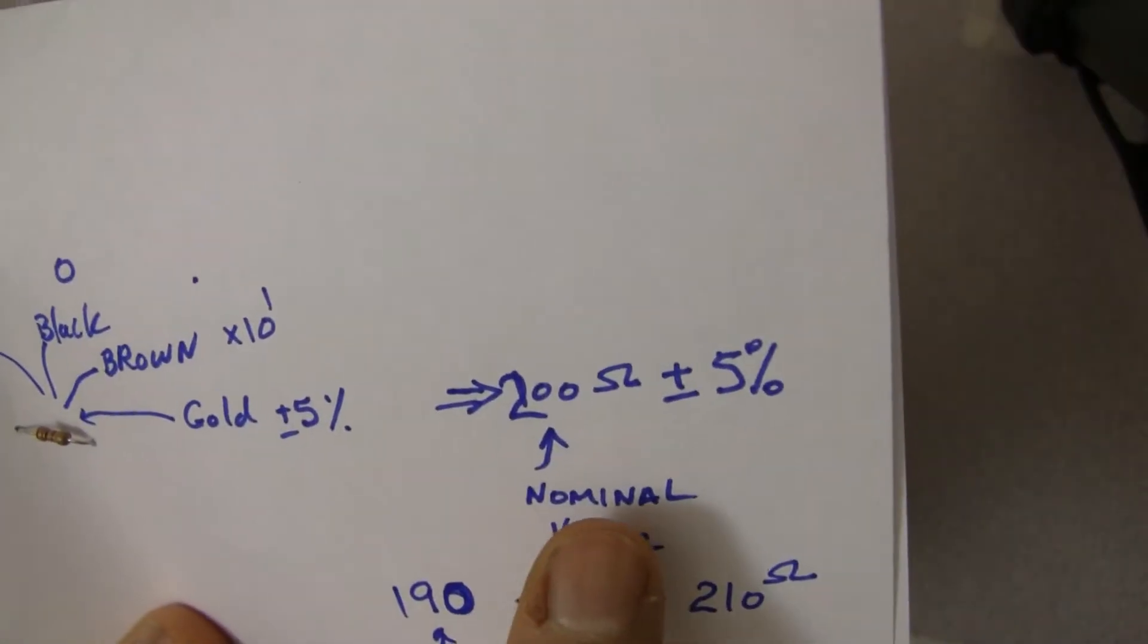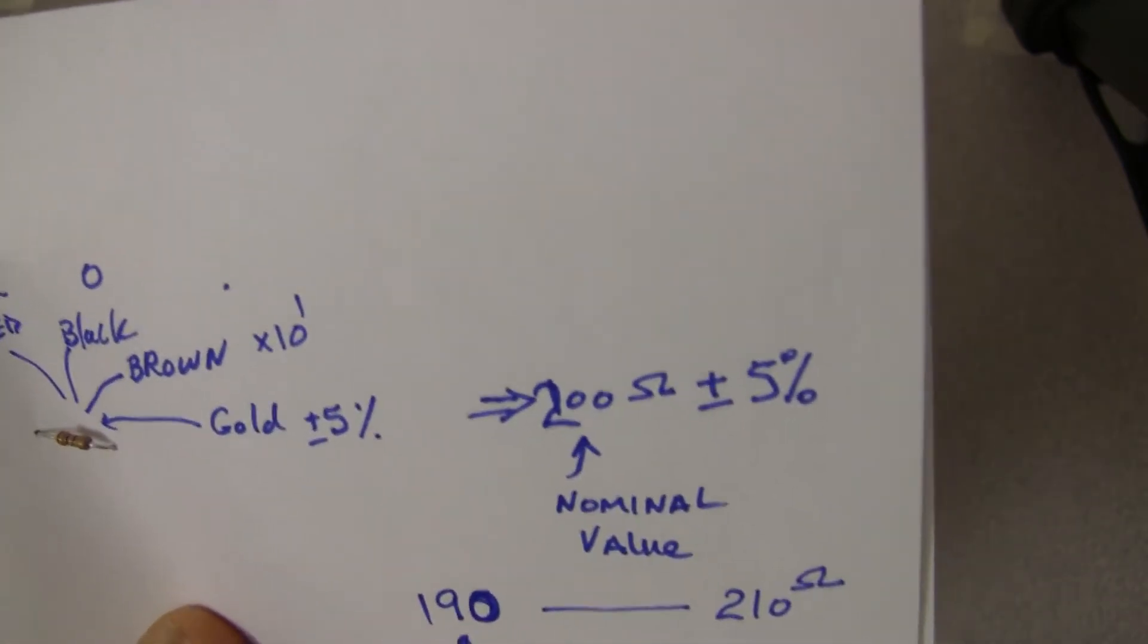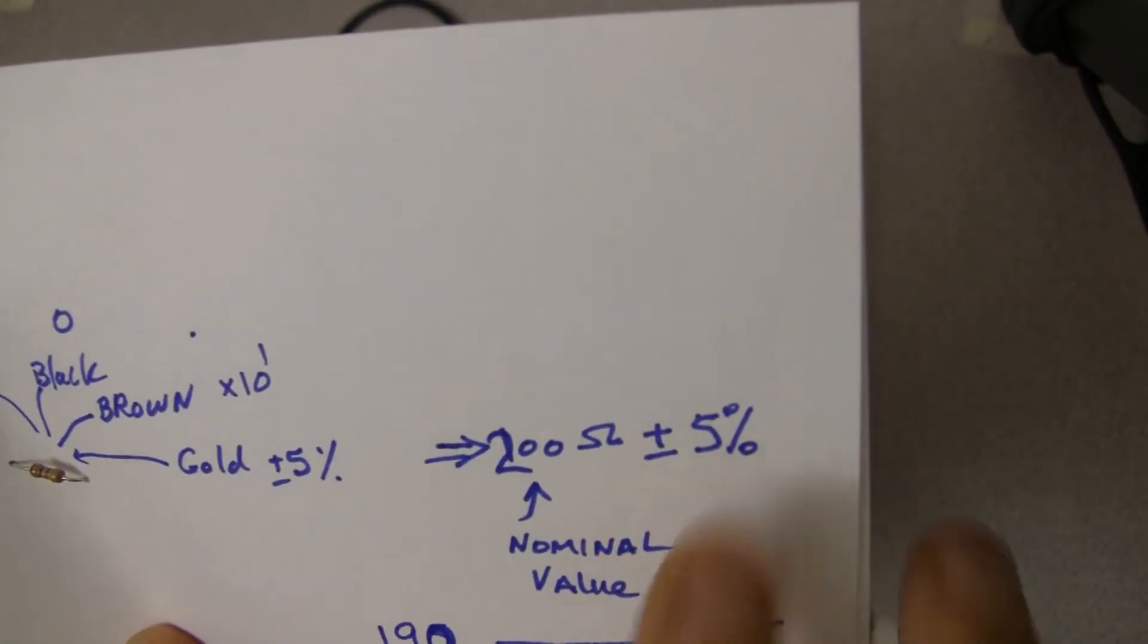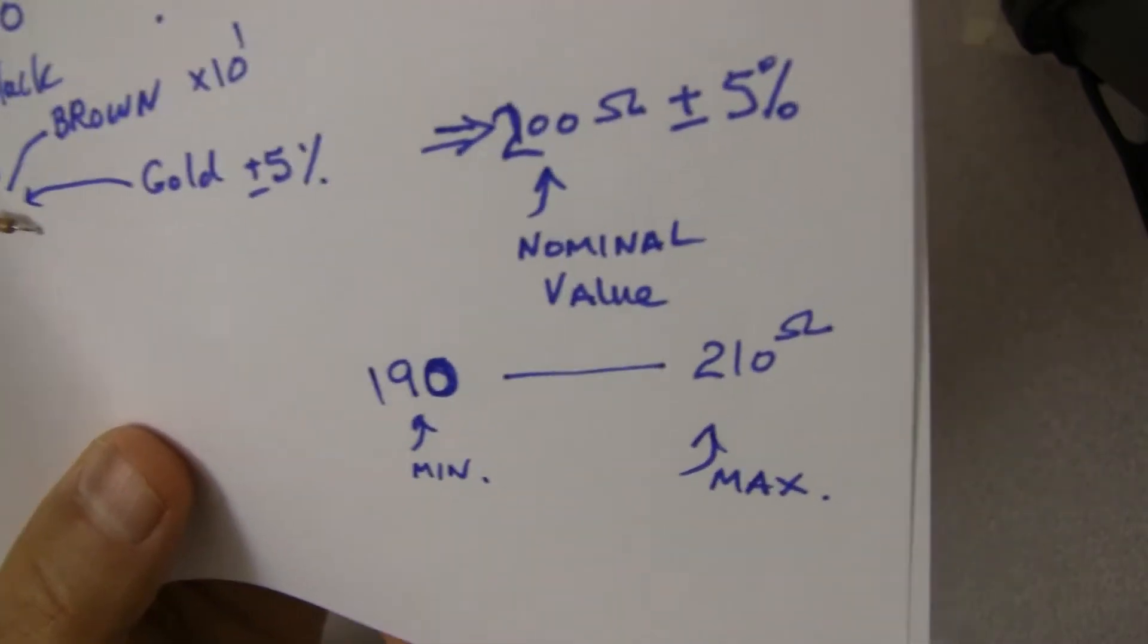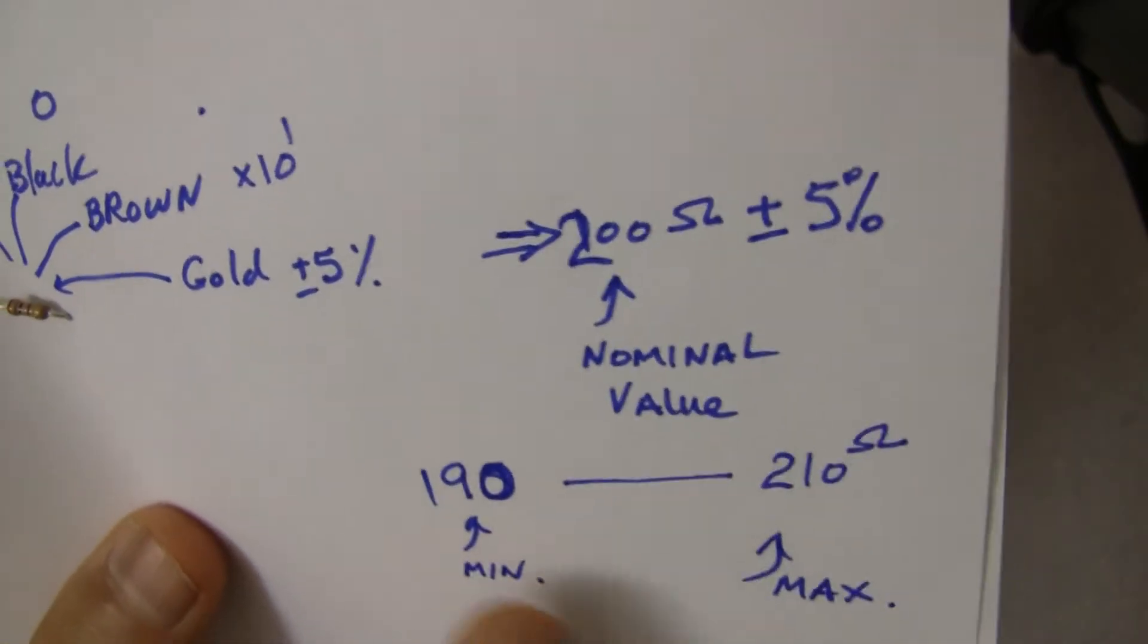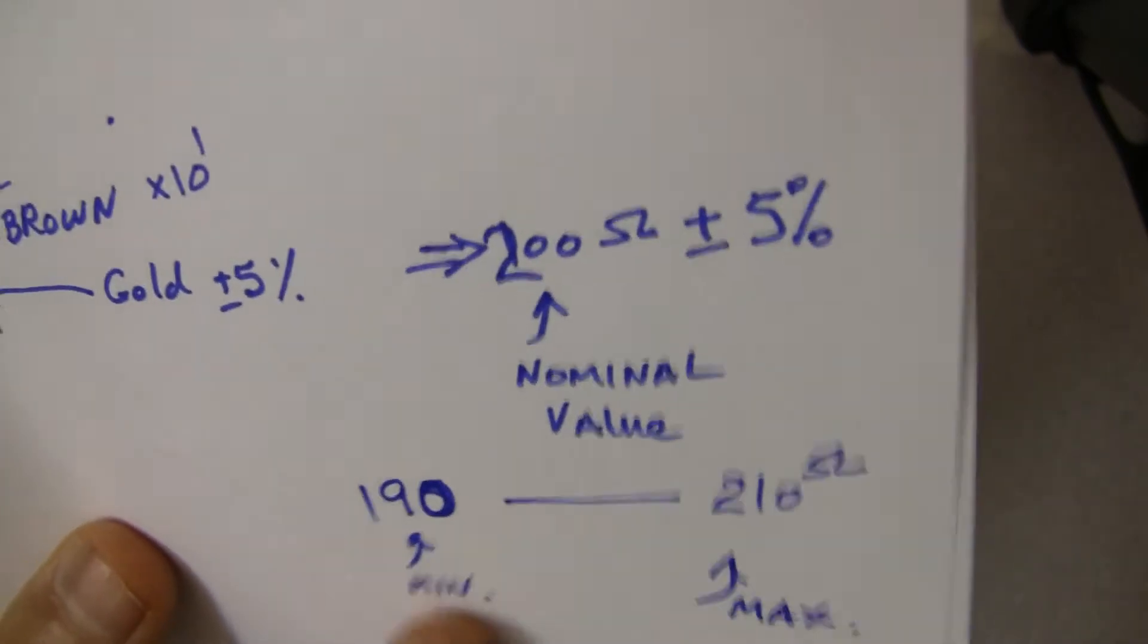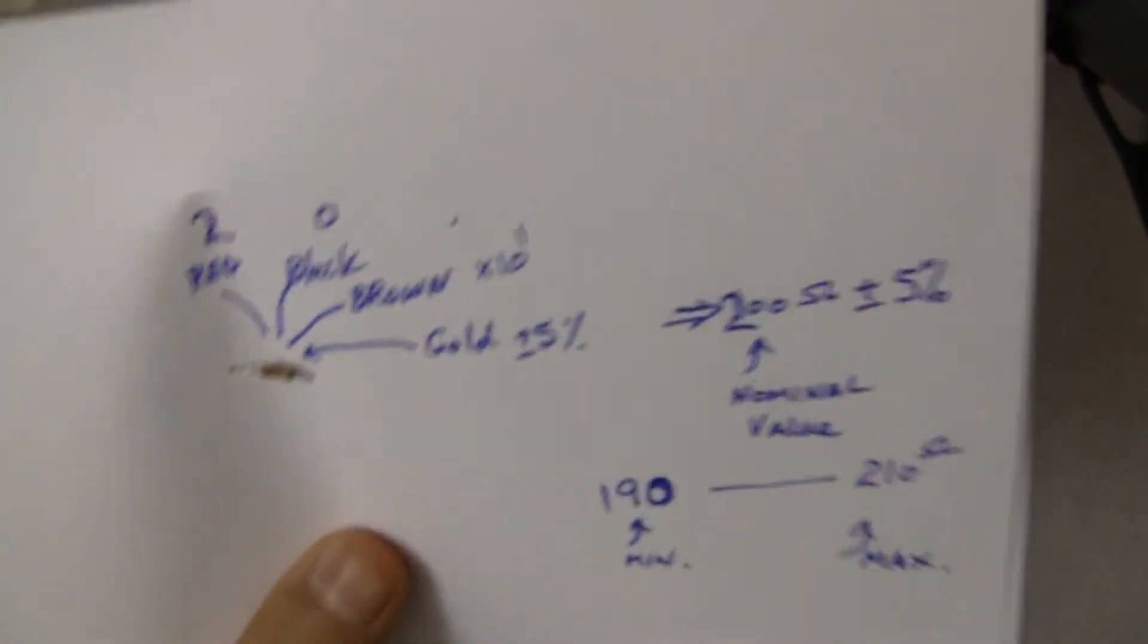So your resistor is 200 ohm. This is called a nominal value. In an ideal world, it would be that amount. But it has a tolerance of plus and minus 5%, which basically means, in real life, your resistance value when you measure it is going to be somewhere between 190 and 210 ohm. 5% below, 5% above. Those are called min and max value. Now how do we find out what the actual value is?